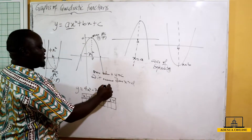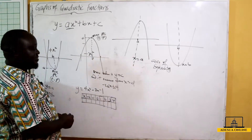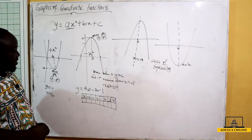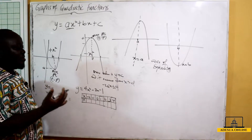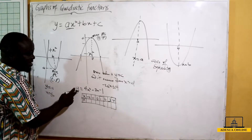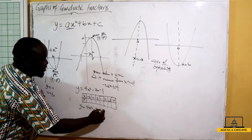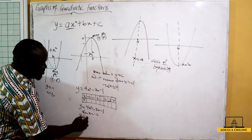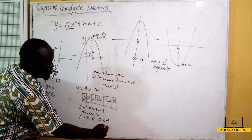So x is greater than or equal to negative 2 and less than or equal to 4. We are going to find the corresponding values of y by substituting the values of x into the function. So if y = 4x² - 3x - 1, we start with x = -2, giving y = 4(-2)² - 3(-2) - 1.